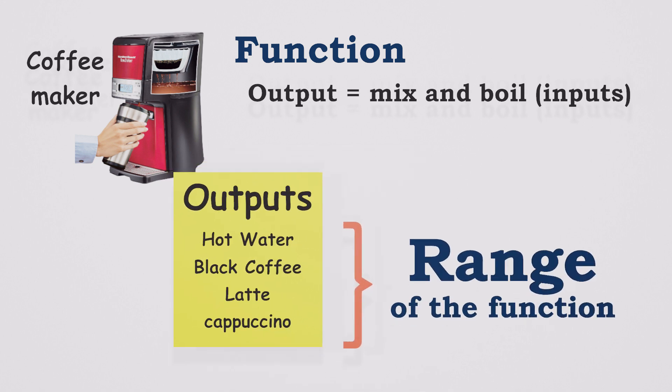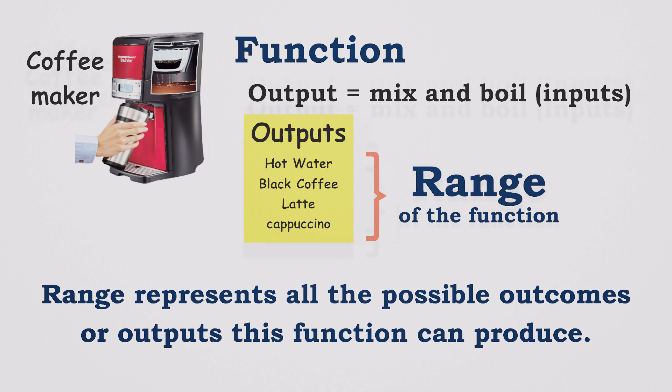The range represents all the possible outcomes or outputs that our coffee machine can produce. In this case, the range includes hot water, black coffee, latte, and cappuccino, the delightful choices this machine offers.